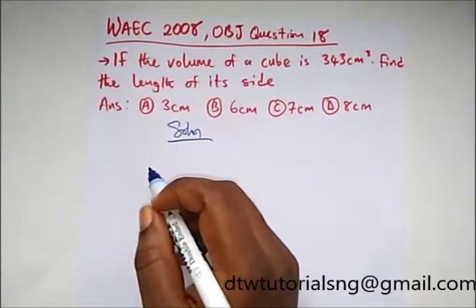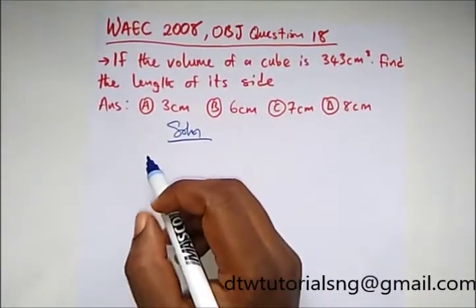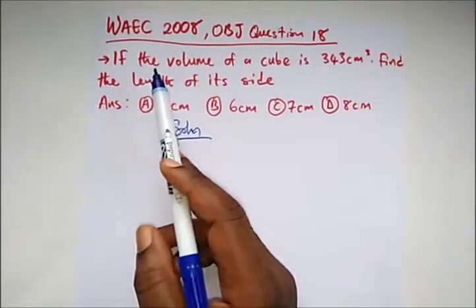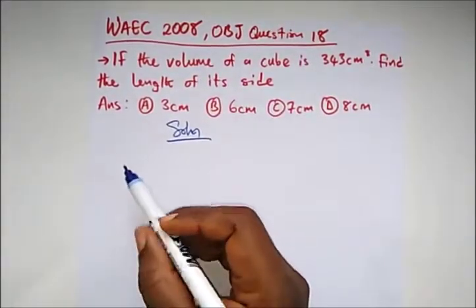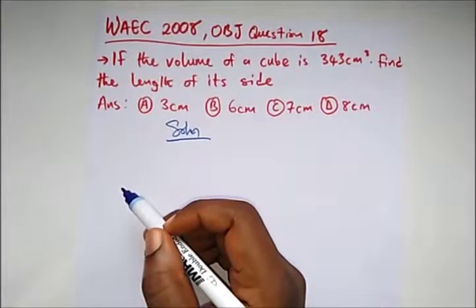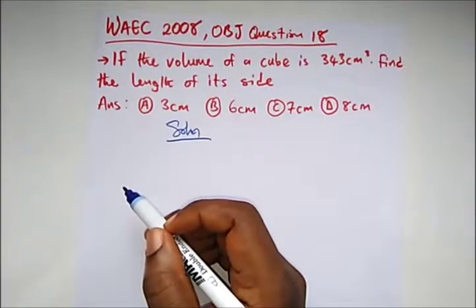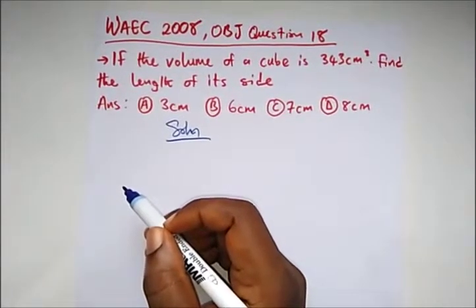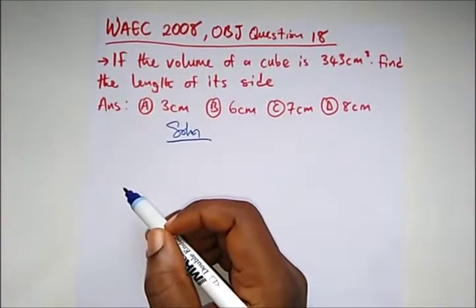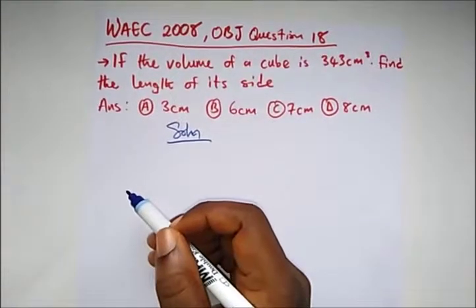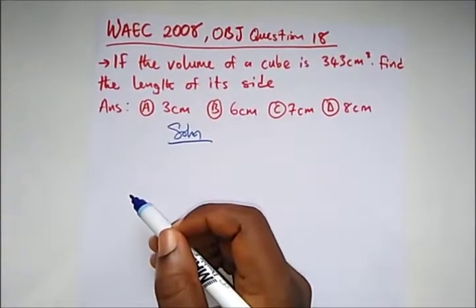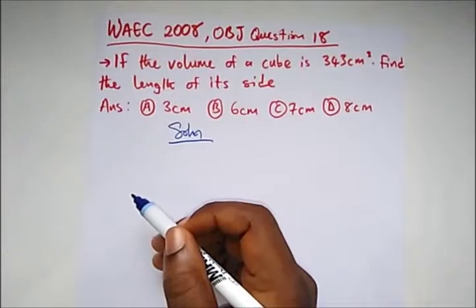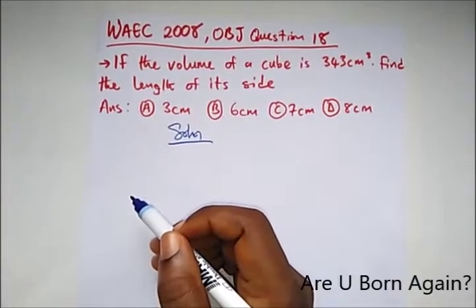This is a question from WAEC 2008, OBJ question 18. It said if the volume of a cube is 343 cm³, find the length of its side. Now you might get confused. I've already done an introductory topic on the cube, its formulas and all. This question is to find the length of the side, not the length of the diagonal side.